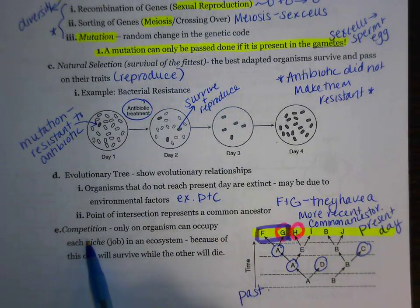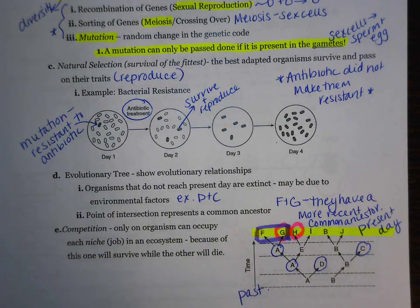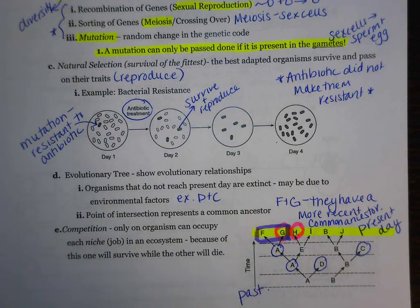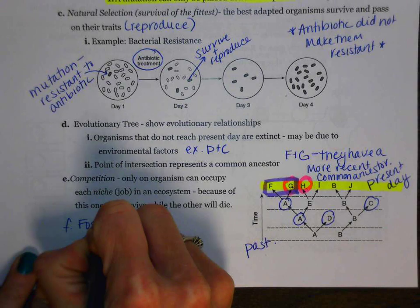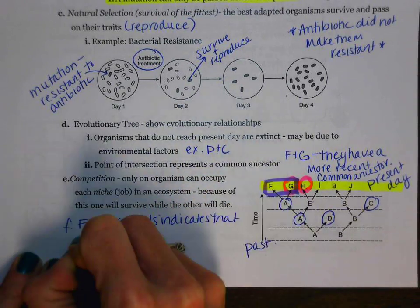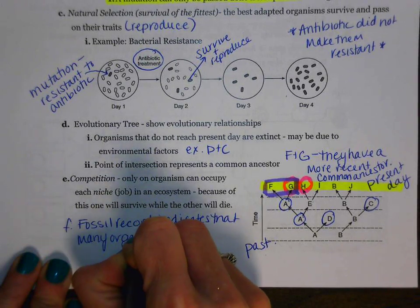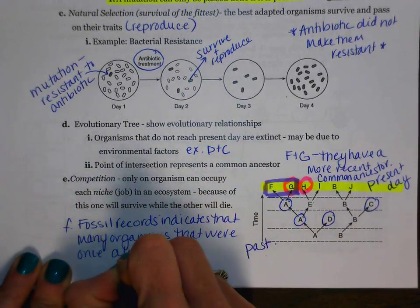The last little bit that we need to know is about competition. Competition means that only one organism can occupy each niche. A niche is a job or a role that an organism has in an ecosystem, and it usually refers to a feeding relationship. Because of this, you don't want two organisms to occupy the same niche — if they do, most likely one of them is going to die, because they're fighting over a limited or finite amount of resources. One other thing to add is that the fossil record indicates that many organisms that were once alive are now extinct.